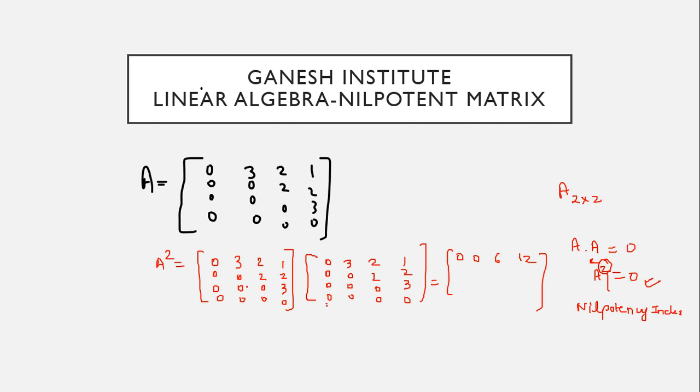Then second row, first column, all 0s. Second row, second column, all 0s. Second row, third column, 0, 0. Second row, fourth column, so this 0 times 1 is 0, 0 times 2 is 0, 2 times 3 is 6.